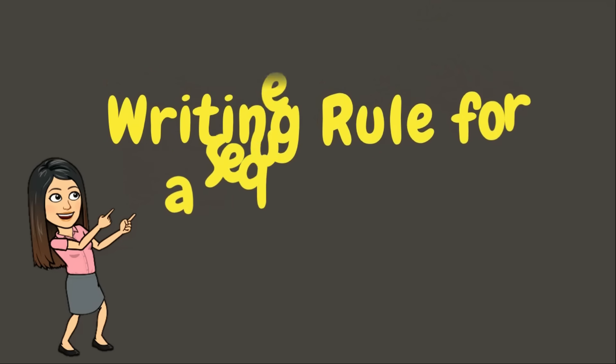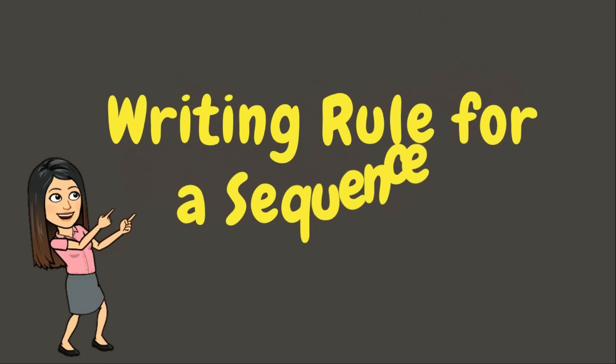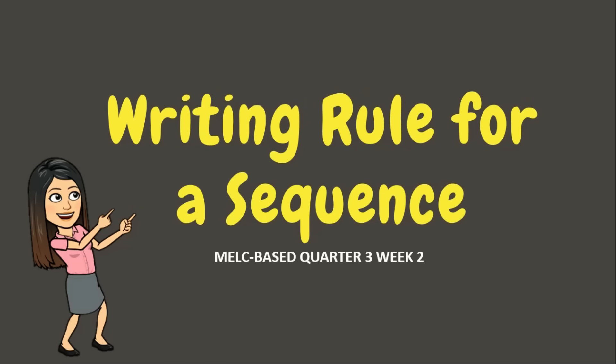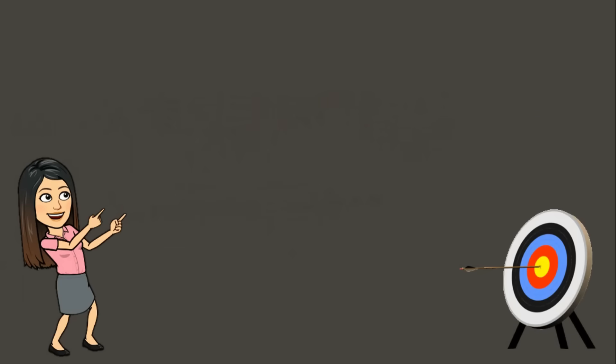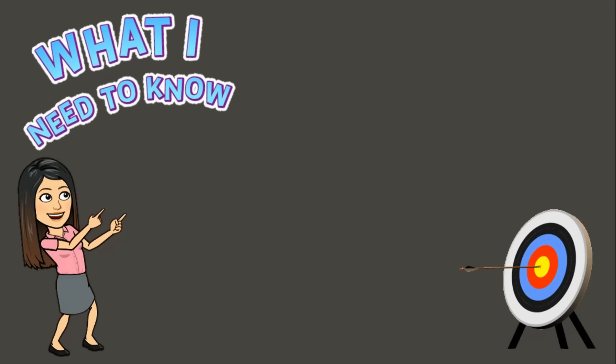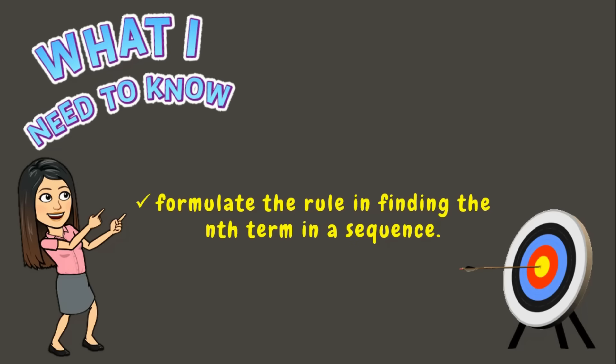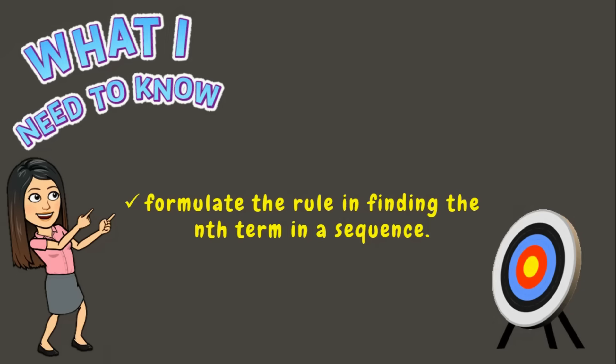Hello there students, welcome back to my classroom. For today's lesson you are going to learn how to formulate the rule in finding the nth term in a sequence. Let us begin. Let's take a look at this example: we can see numbers 1, 3, 5, 7, where the next three numbers are missing.